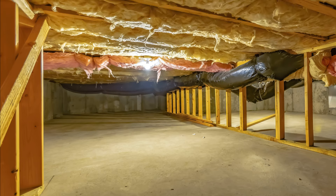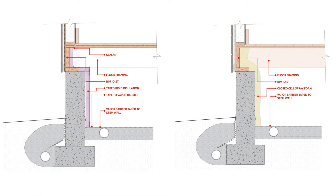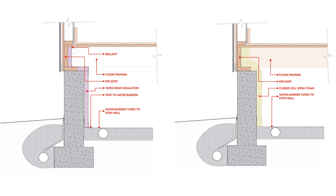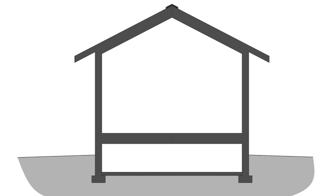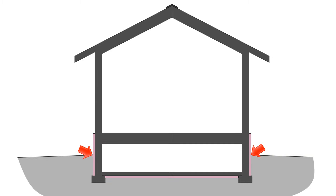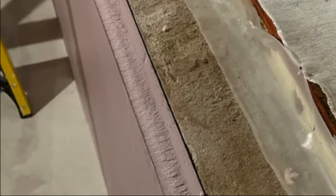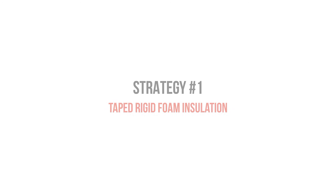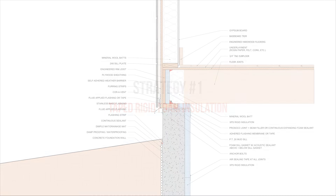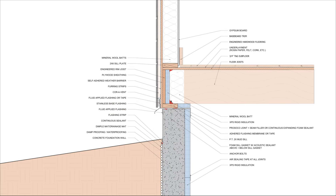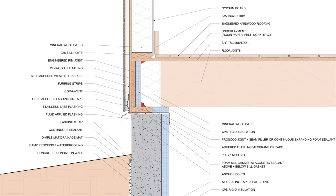Since a conditioned crawl space is essentially a short basement, we can use the same strategies to insulate it as we would a typical basement — either on the interior or on the exterior of the assembly, though insulating on the interior tends to be the most common strategy. The first strategy is to install taped rigid foam insulation on the interior side of the stem walls and around the rim joists, sealing the connection to the rim joists with a fluid-applied joint and seam filler compound or expanding foam sealant.